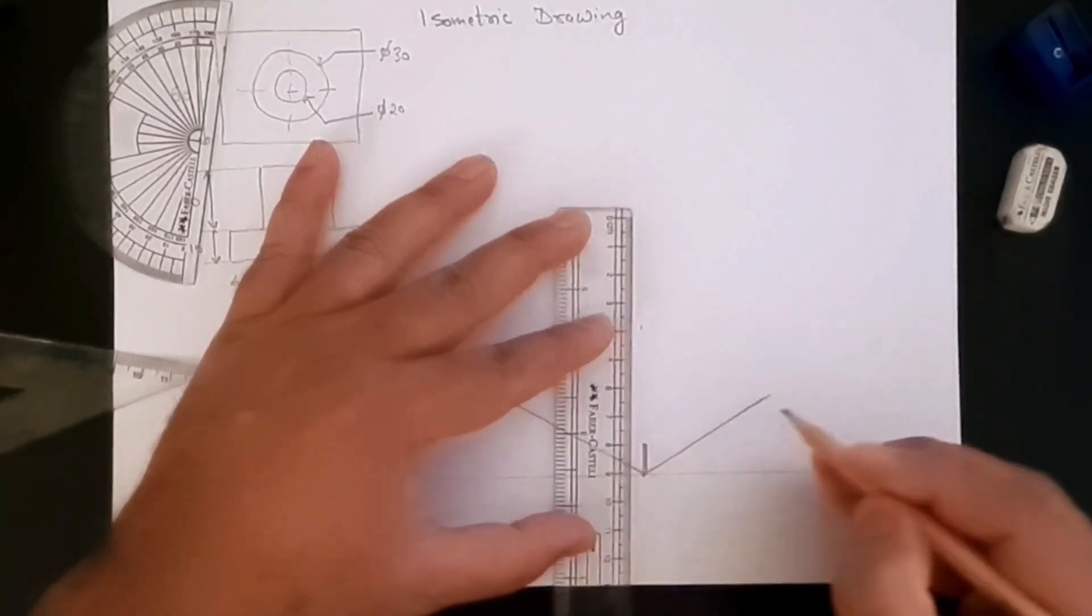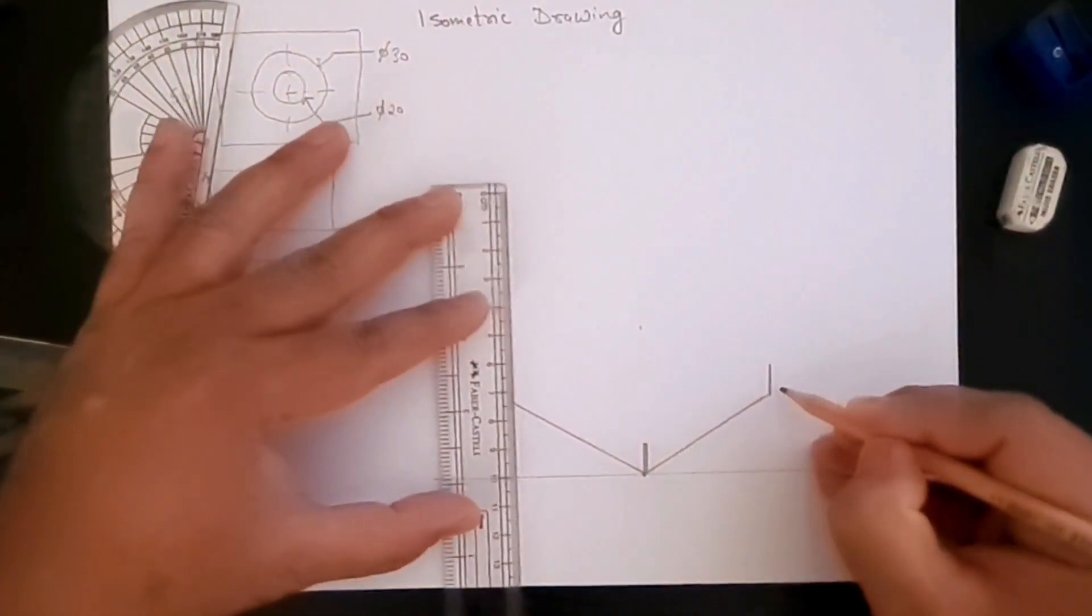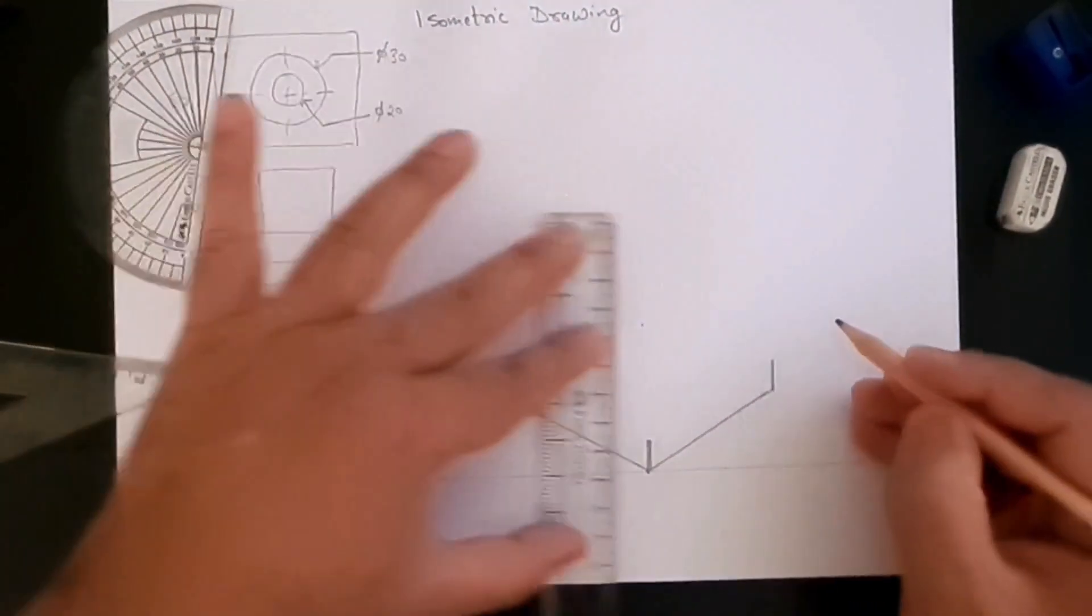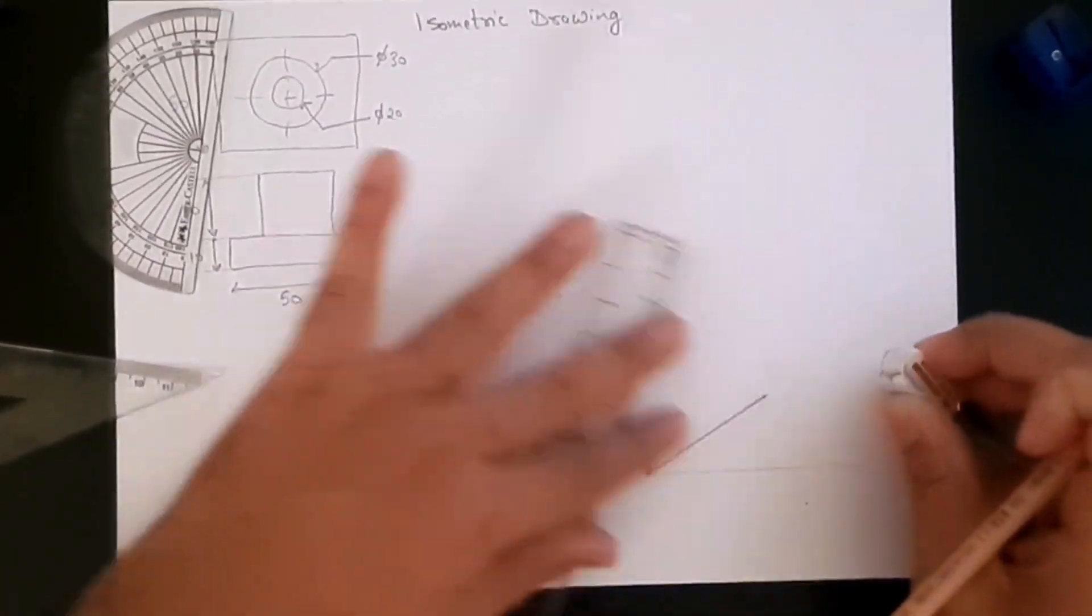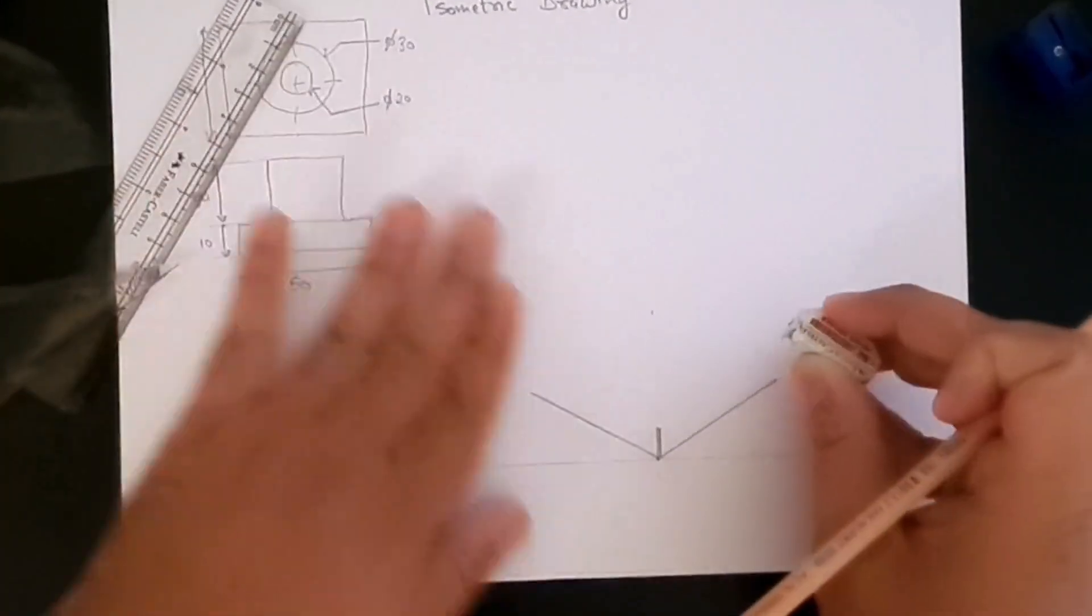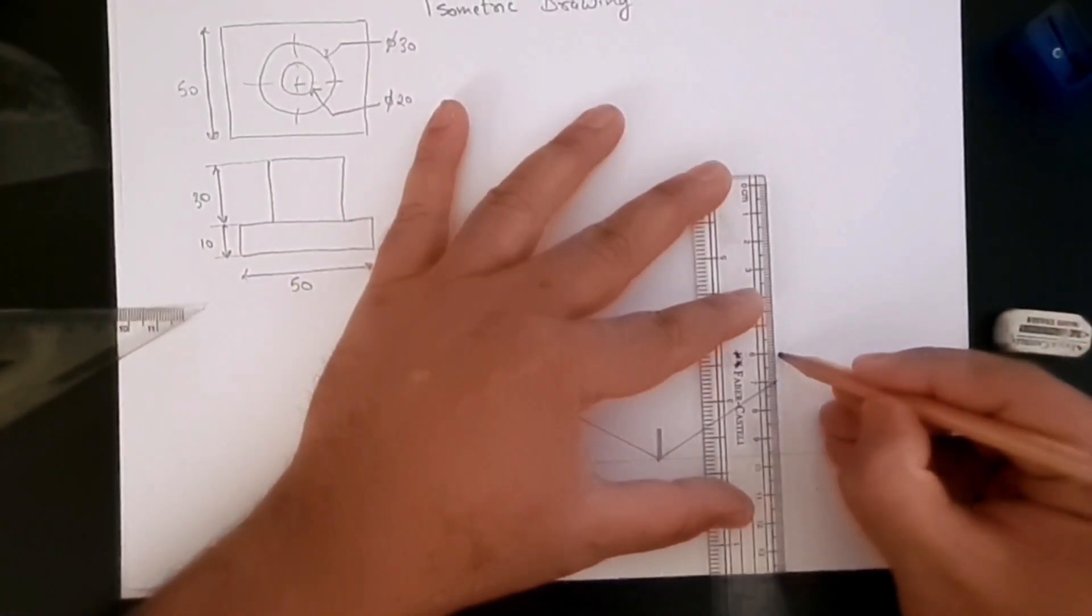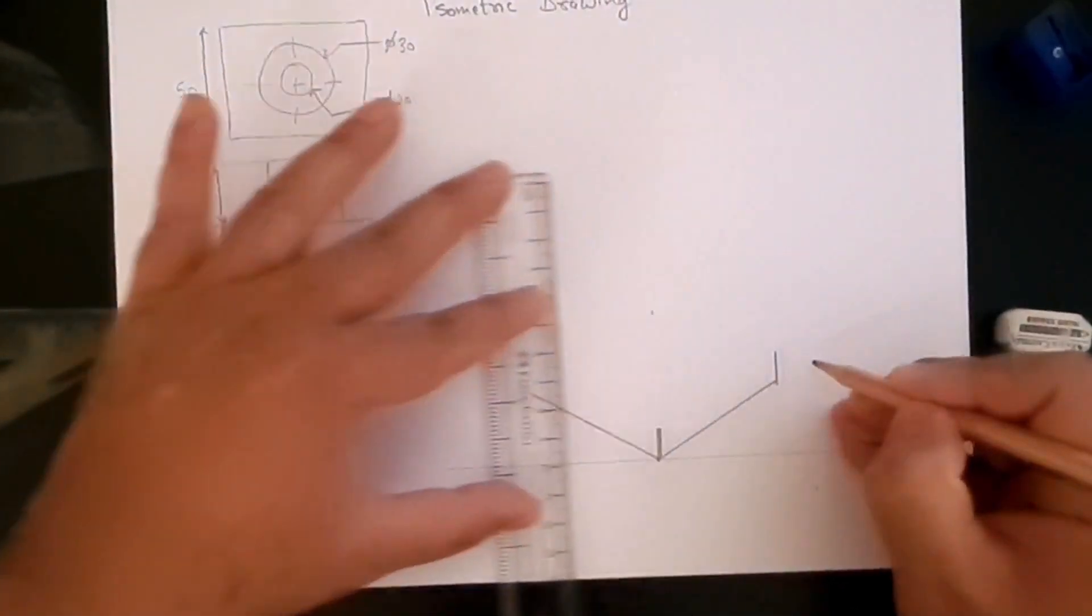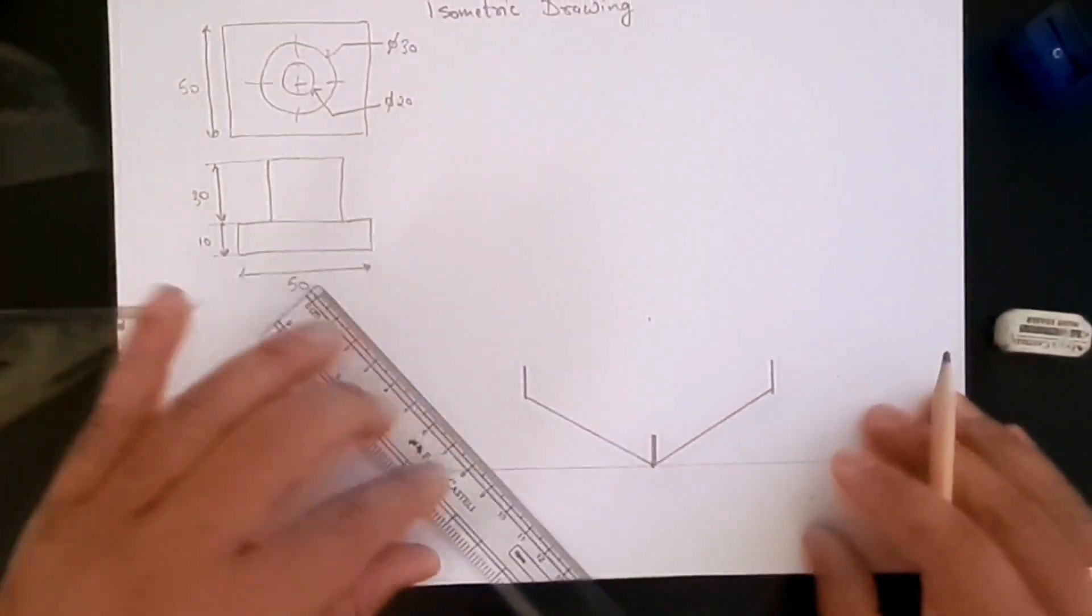And then we'll also create the 10 millimeter thickness here. Well, just on the side here: 10 millimeters here and 10 millimeters here. 10 millimeters here and 10 here, and then we need to join these.